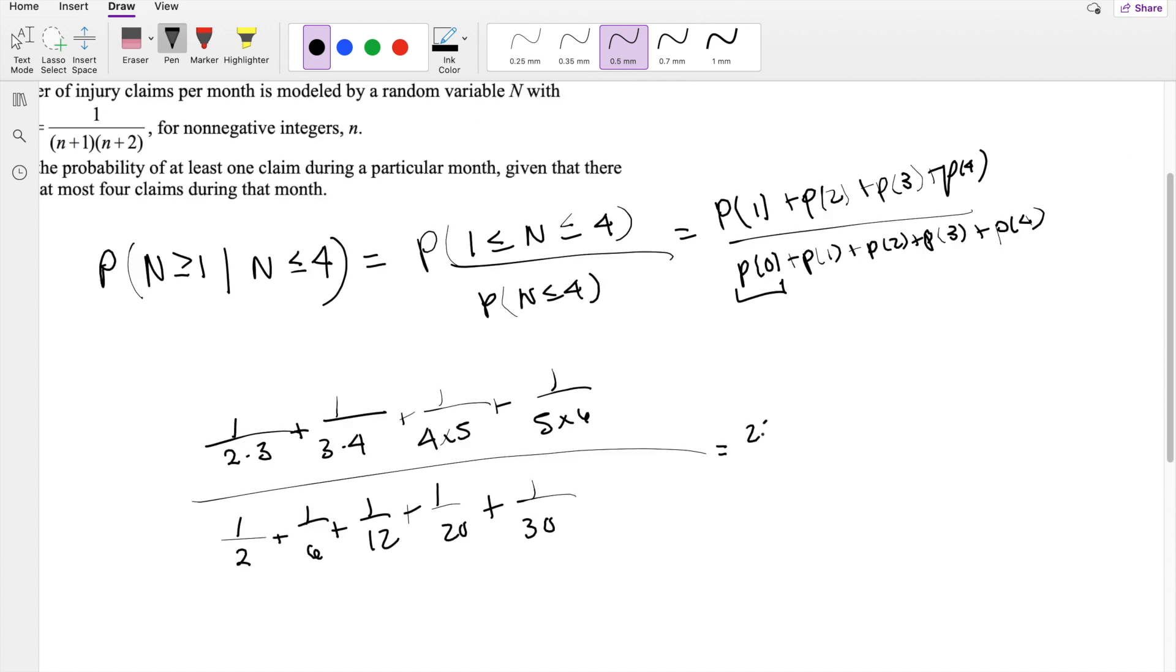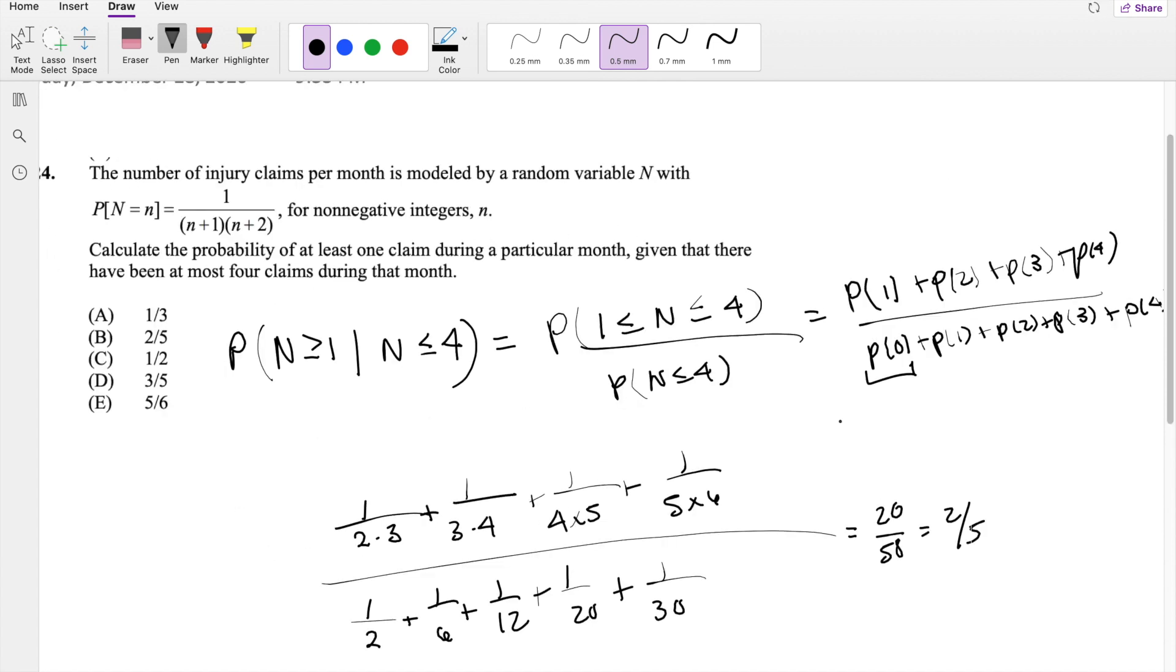So then this is equal to 20 over 50, which is equal to 2 fifths, our answer B.